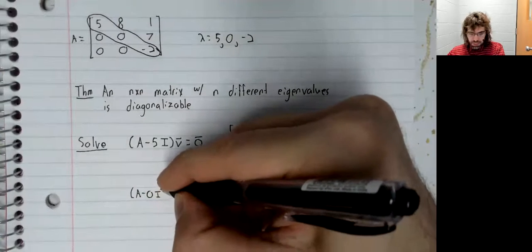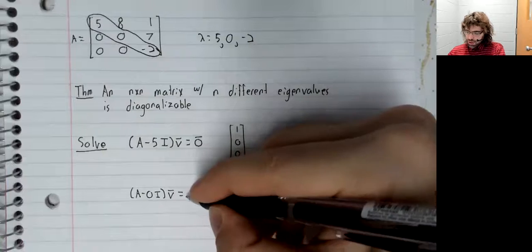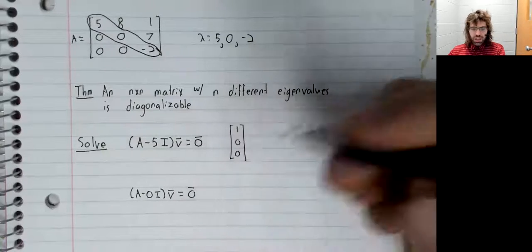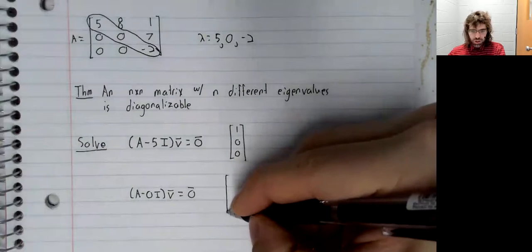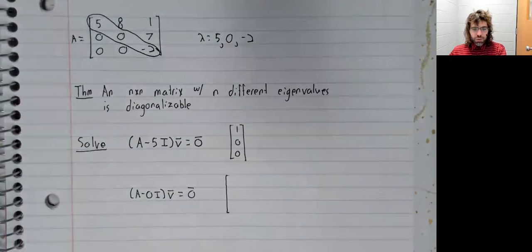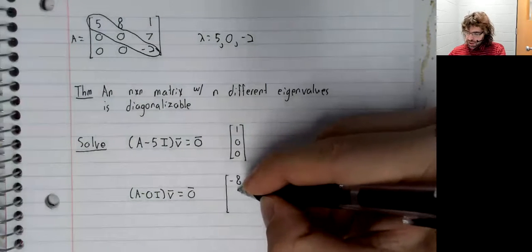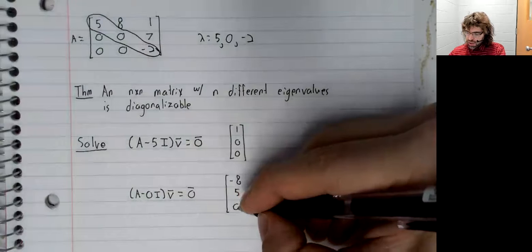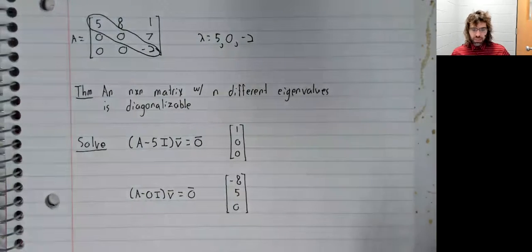A minus zero I times V equals zero. Again, this is just solving a matrix equation using Gauss-Jordan elimination. There are infinitely many solutions. There's one of them.